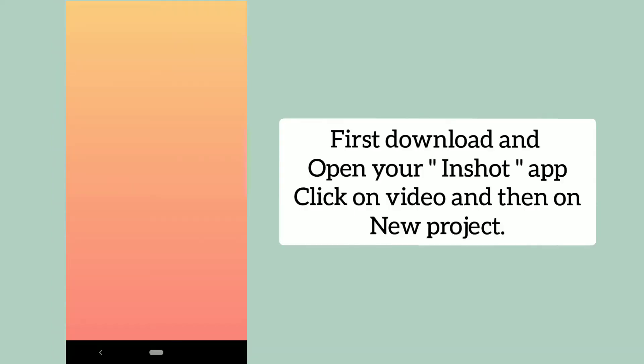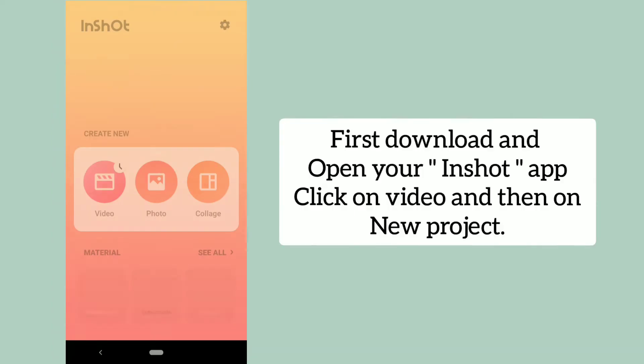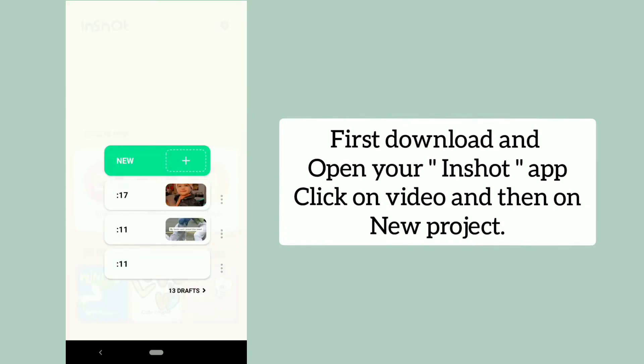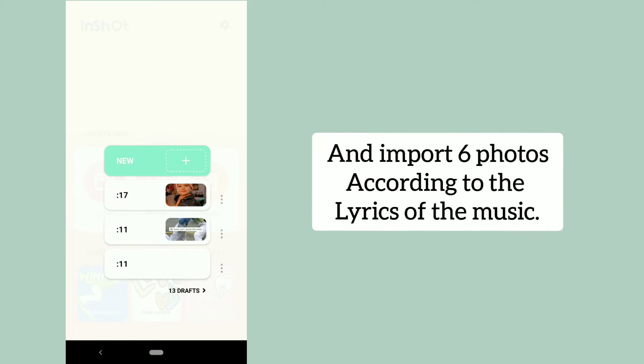First, download and open your InShot app. Click on video and then on new project, and import six photos according to the lyrics of the music.